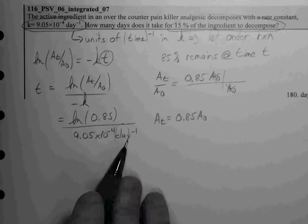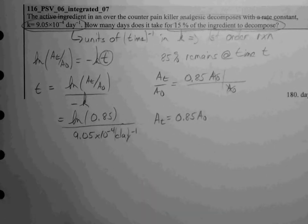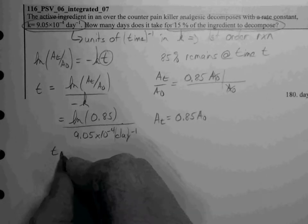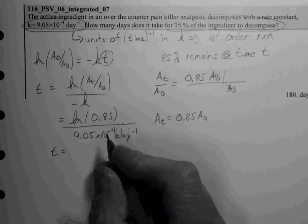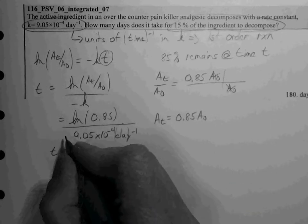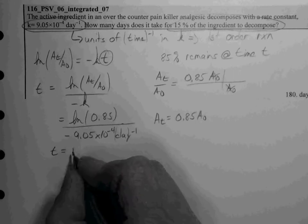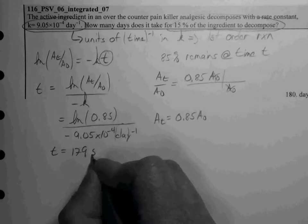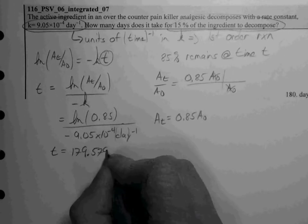Okay, so 1 over 1 over days means days comes up into the numerator. And our time is thus equal to 179.579 days.